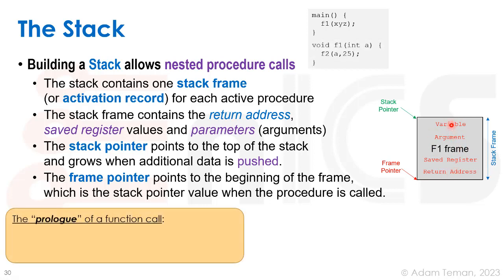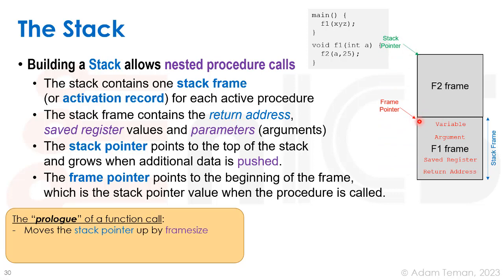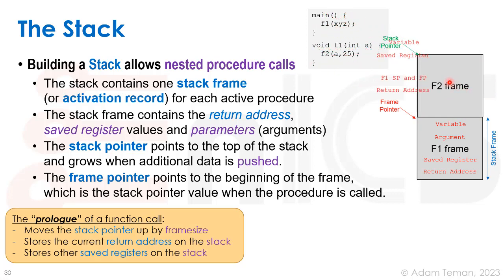A function call has what we call a prologue that comes at the beginning of the function. The prologue moves the stack pointer and the frame pointer up by the frame size of the next frame. It then stores the current return address, saved registers, and so forth onto the stack. So we have a new frame for the f2 function, with some arguments passed in, all stored inside the stack — though some can be stored in registers.